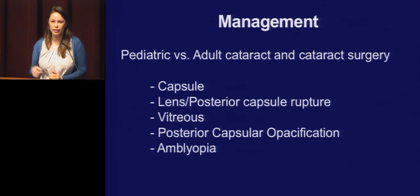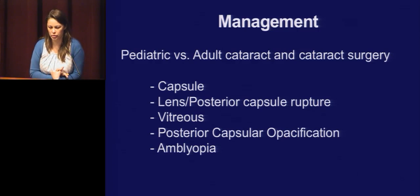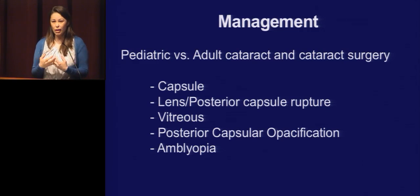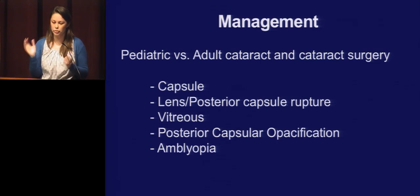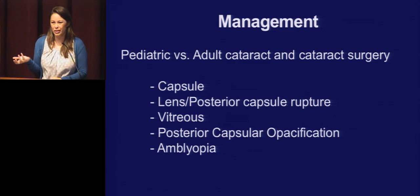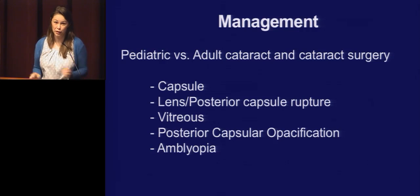The pediatric capsule is very different — it's really tough. In an adult you're pulling 90 degrees from where you want to go, but in the pediatric capsule you have to pull really hard by comparison. The posterior capsule often ruptures, and you're dealing with vitreous a lot. Luckily, the vitreous in kids is really formed and gelatinous, so it doesn't come freely into the anterior chamber the way it does in adults — though I did have a minus 15 patient with a PVD where I had to use triamcinolone for the first time.